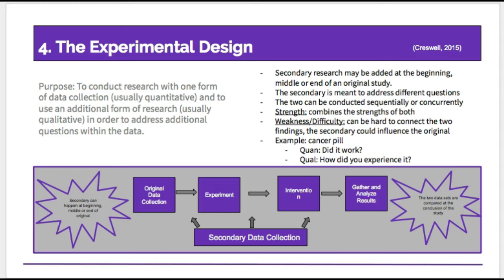The secondary form of collection is used to address a different question than was originally addressed. This form of study gives priority to the original form of study, which is usually quantitative, and then supplements the findings with the supporting form of research, which is usually qualitative in nature. This form of study combines advantages of both qualitative and quantitative studies. The experimental design allows the researcher to collect qualitative data while emphasizing the quantitative approach in its entirety. The difficulty is that it's challenging to ensure clarity about the intent of the secondary form of study, and because the data are addressing different questions, it can be difficult to compare the results. Moreover, introducing qualitative data collection in the middle of a study could actually influence the results of your quantitative data.